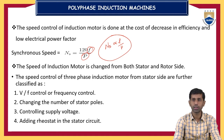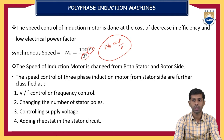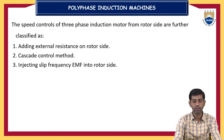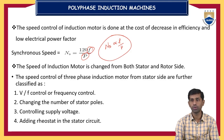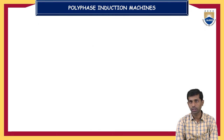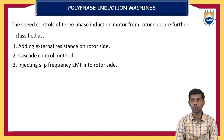Speed control of three-phase induction motor from the stator side is classified into four methods: first, V/f control or frequency control; second, changing the number of stator poles; third, controlling the supply voltage; and fourth, adding a rheostat in the stator circuit. From the rotor side there are three methods: adding external resistance on the rotor side, cascade control method, and injecting slip frequency EMF into the rotor side.